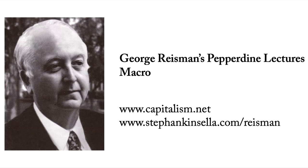We got wave after wave of bank failures. In October 1929, the quantity of money in the United States was approximately 26 billion dollars, and GDP for 1929 was about 104 billion dollars. By 1933, the quantity of money had fallen to about 19 billion — that's 7 billion off of 26 billion, more than a 25% reduction in the quantity of money. That reduction is the direct reflection of bank failures.